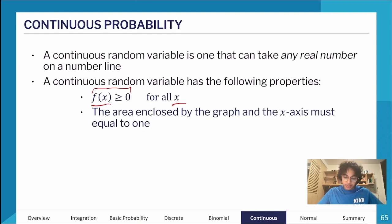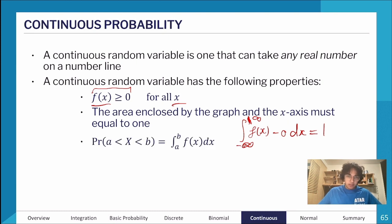The area enclosed by the graph and the x-axis must equal one. That's taking an integral from a to b of f(x) minus zero dx must equal one. It's more accurate to write infinity in both of these, so negative infinity to infinity. For the full length of that function, the area enclosed must equal one.